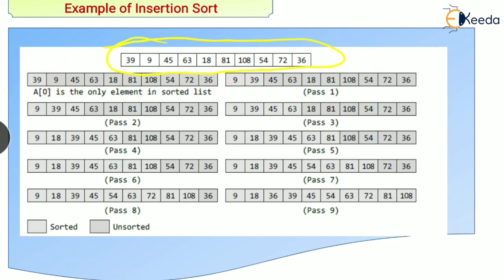After pass 1, only one element — 39 — is in the sorted list. After pass 1, we sort two elements: 9 and 39. In pass 2, the sorted list automatically adds 45 because those three elements — 9, 39, 45 — are already in sorted order. In pass 3, we get four elements in the sorted list: 9, 39, 45, 63.